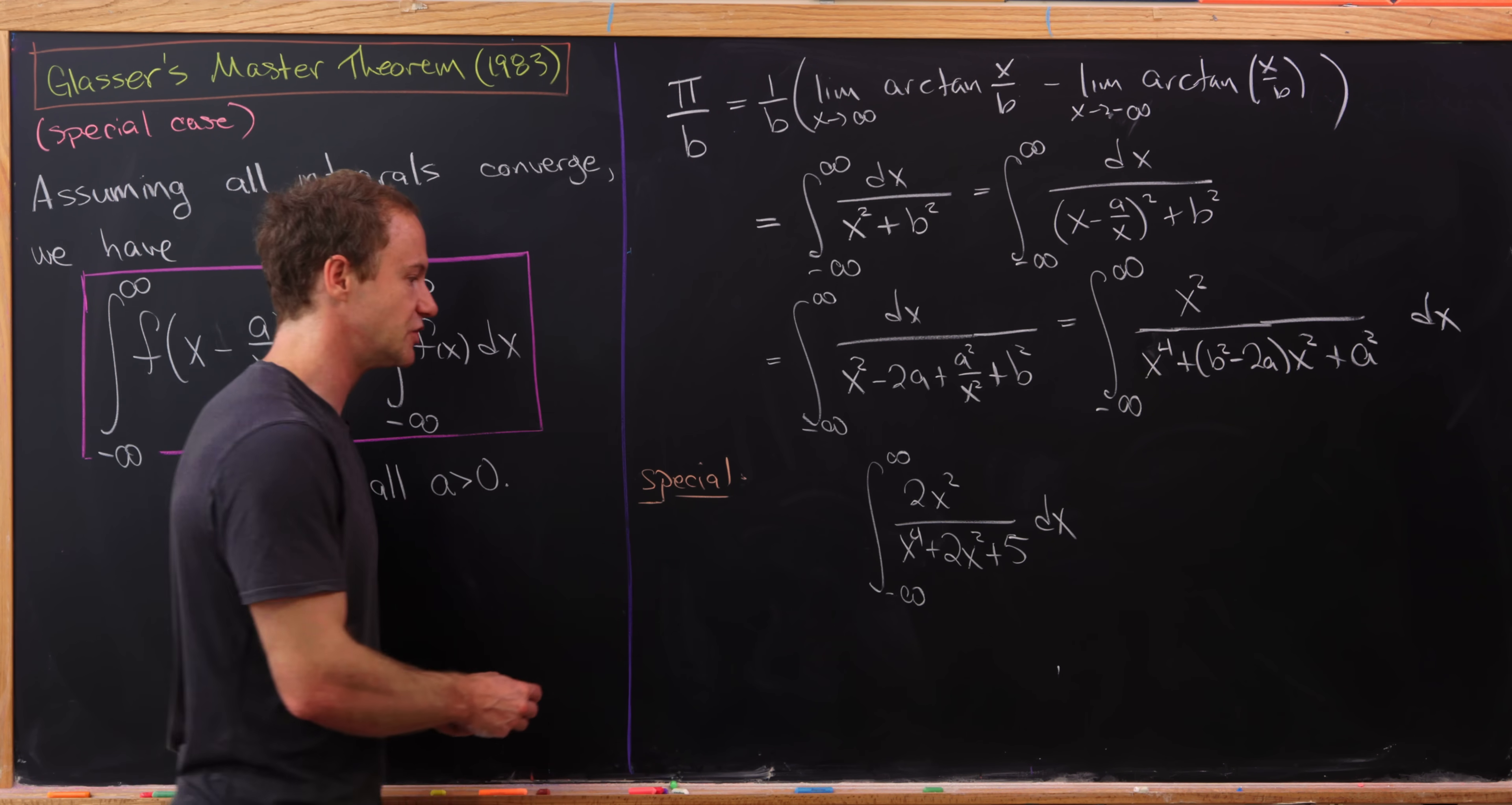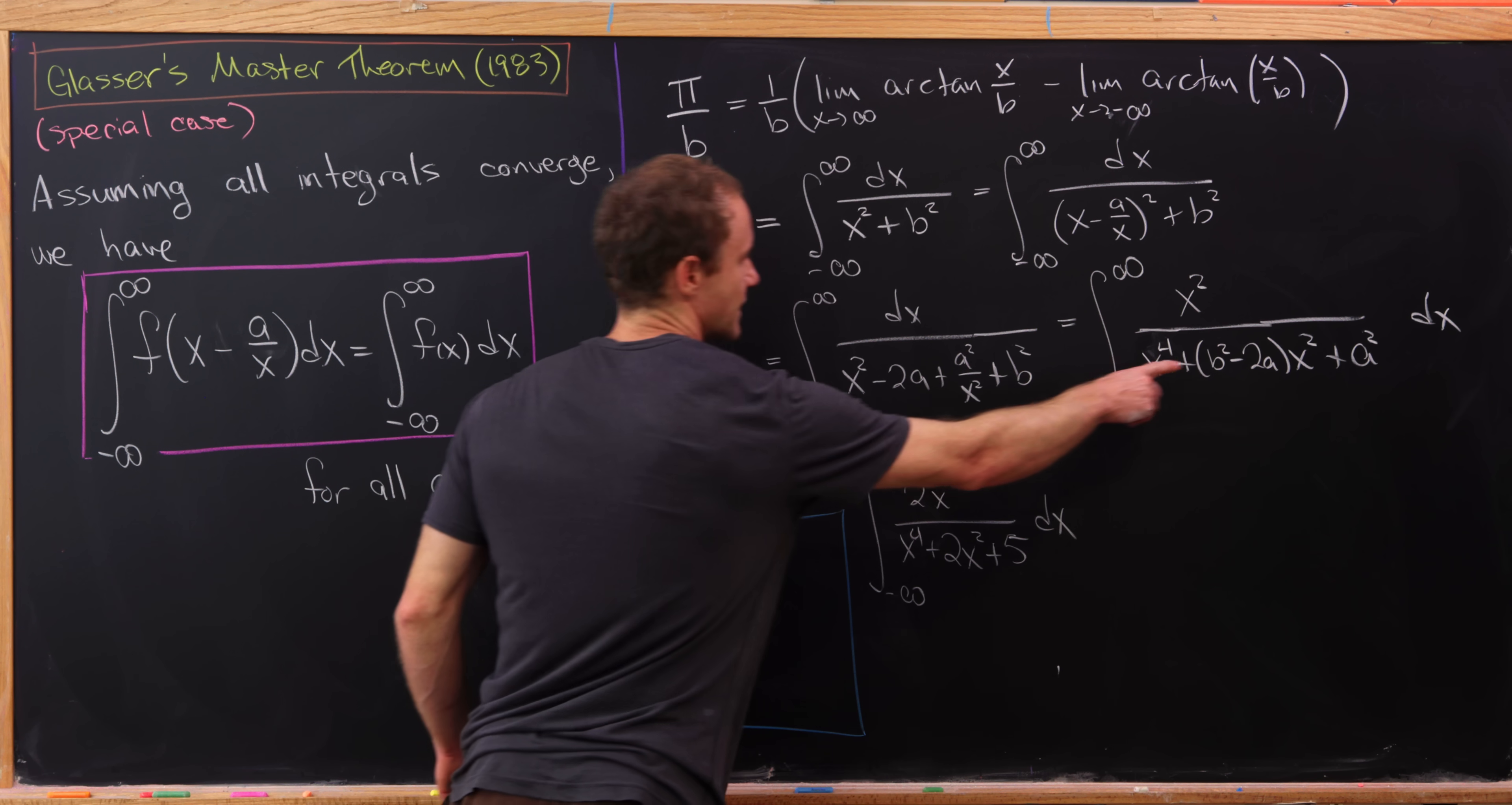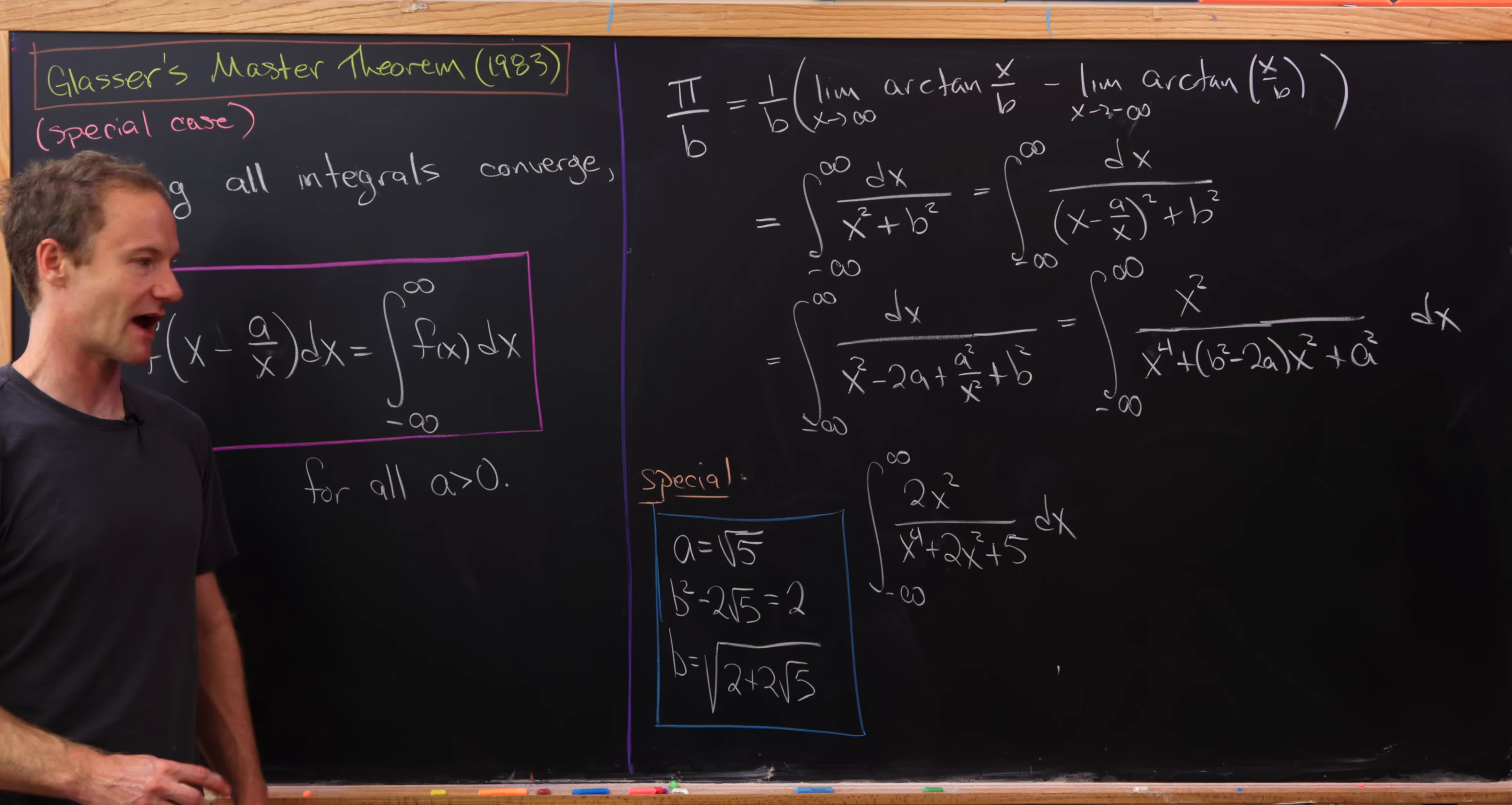But using this trick, all we have to do is determine the values of a and b. We can set up a system of equations to figure that out. Notice that a squared is the constant term over there, and 5 is the constant term here. That means a must be equal to the square root of 5. We know we take the positive square root because of this rule. But then we know that b squared minus 2a must be equal to the coefficient of x squared, which is 2. So that means b squared minus 2 root 5 must be equal to 2. But that easily allows us to solve for b as the square root of 2 plus 2 times the square root of 5. So we've got this nice nested radical here.